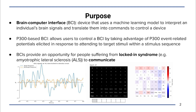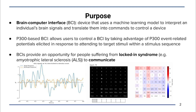Specifically, we work with the P300-based BCI Speller. To spell a character, a user looks at a screen of characters, such as the one shown here, and focuses on a target character while groups are sequentially flashed.